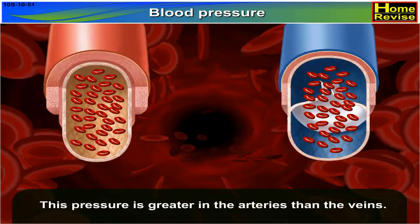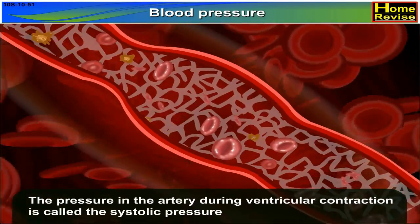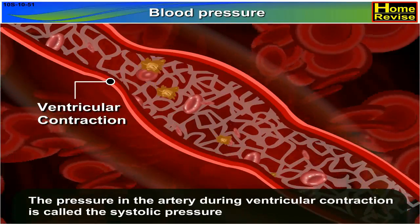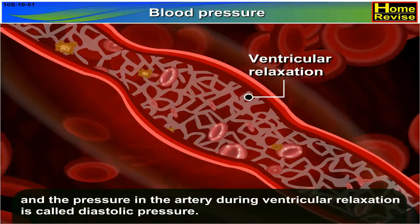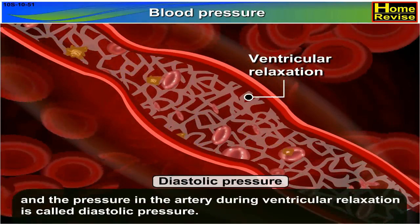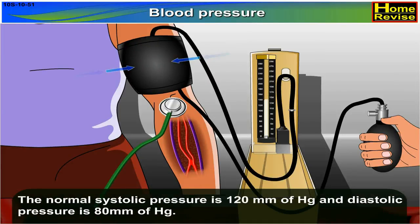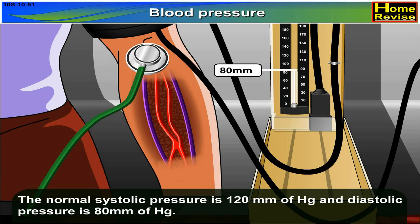This pressure is greater in the arteries than the veins. The pressure in the artery during ventricular contraction is called the systolic pressure, and the pressure in the artery during ventricular relaxation is called diastolic pressure. The normal systolic pressure is 120 mm of mercury and diastolic pressure is 80 mm of mercury.